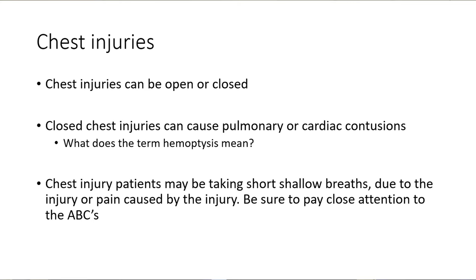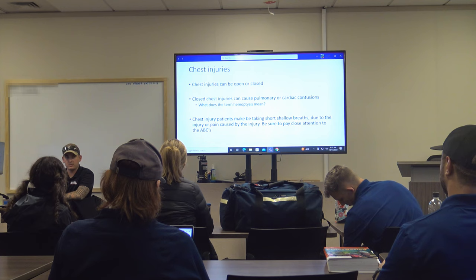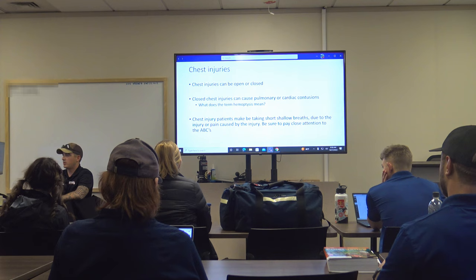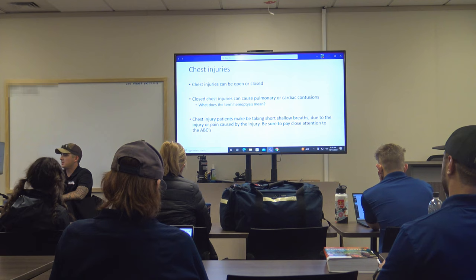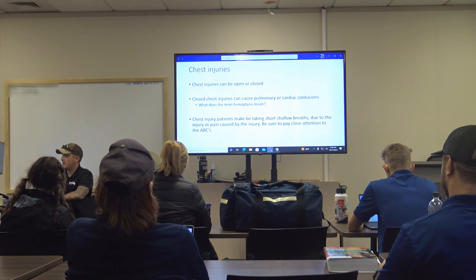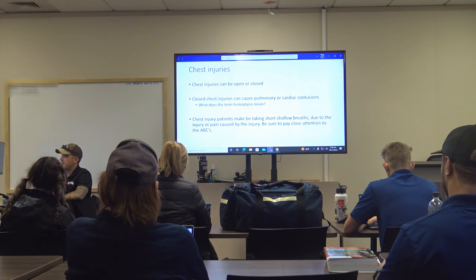Chest injuries are described as either open or closed. Open means exposed to the outside world — basically, is the skin punctured? Causes of open chest injuries include lacerations, gunshots, stabbings, and other penetrating injuries. Our big concern with an open chest injury is air accumulation where it shouldn't be.